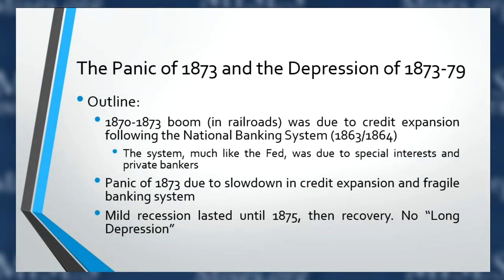The national banking system, much like the Federal Reserve, was largely due to special interests and private bankers. For those who've read Murray Rothbard's work on the origins of the Federal Reserve — how bankers organized a cartel, met at Jekyll Island, and pushed through a bank bill through Congress — this is fairly similar. The Panic of 1873 was due to the inevitable slowdown in credit expansion combined with the fragile banking system.